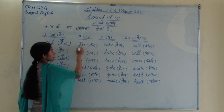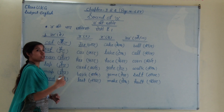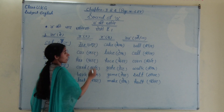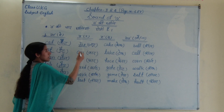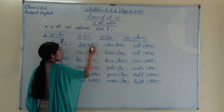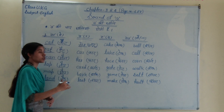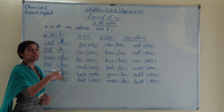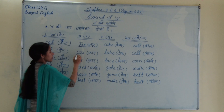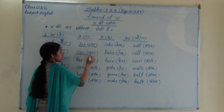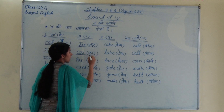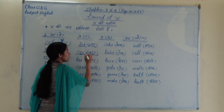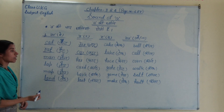Ab yao hoa dekhengi: j-a-r. Yahan pe 'a' ka kya ucchaaran hora hai? J for ja, r for ra — jar. Phir second hai akka: car. C-a-r — car. Yahan pe 'a' ka ucchaaran a ki rupi hora hai.